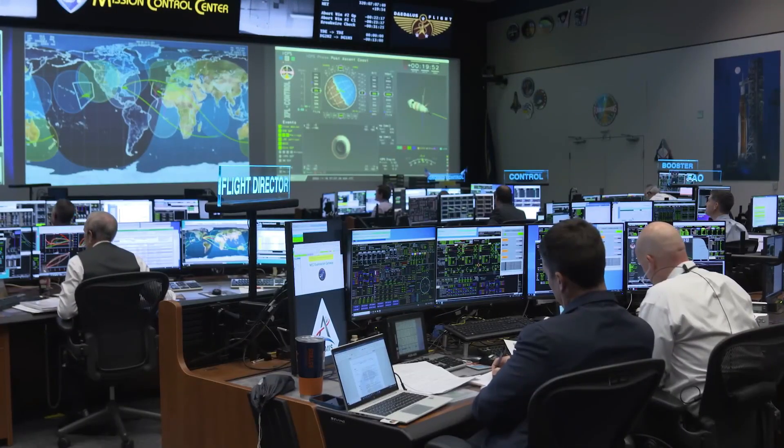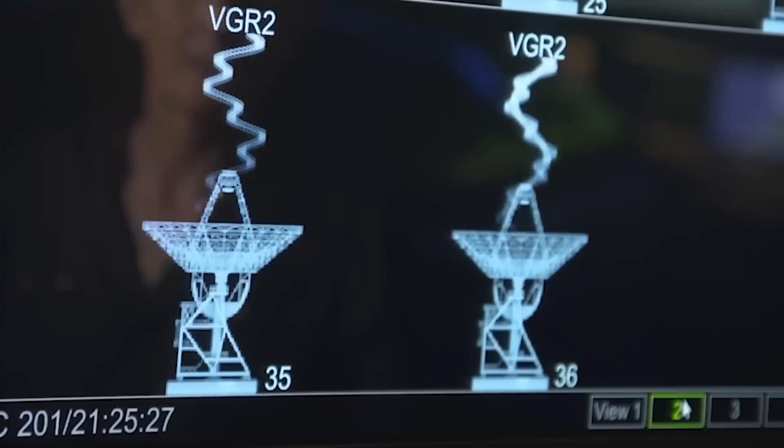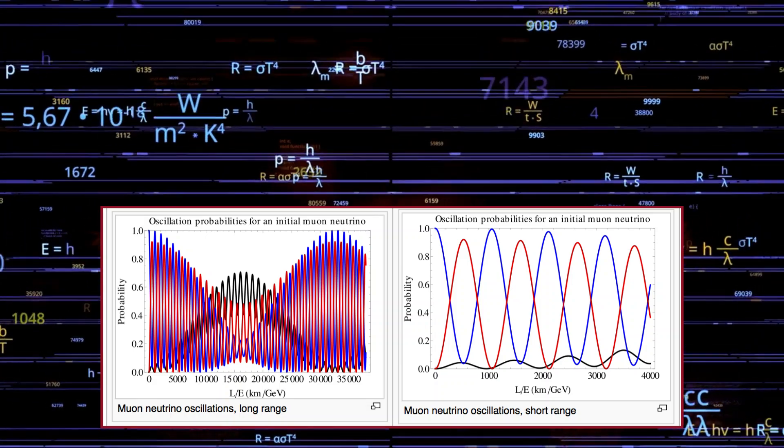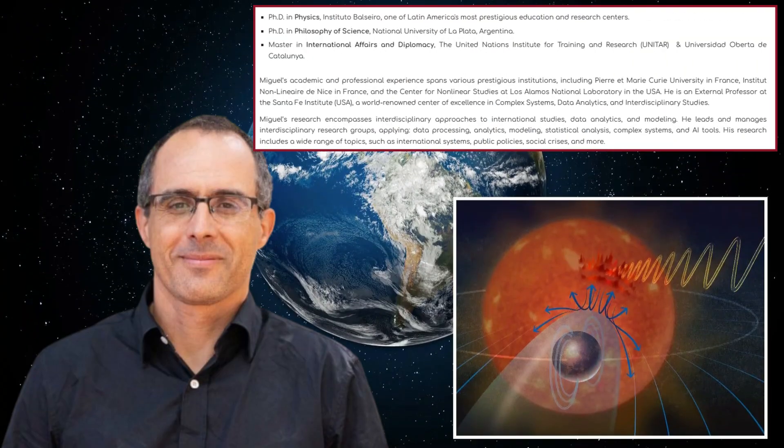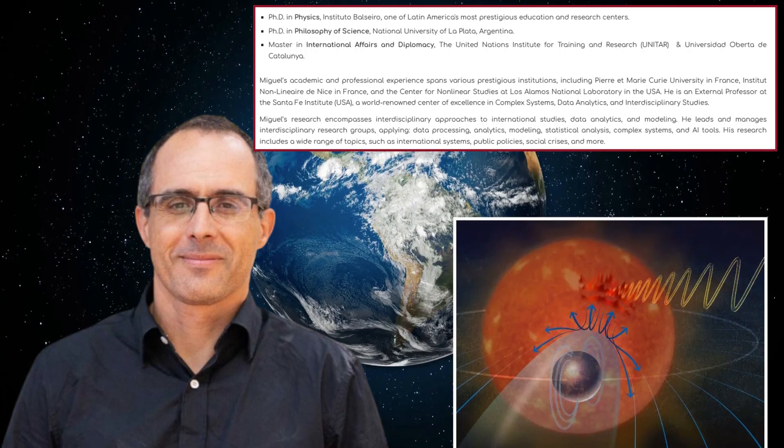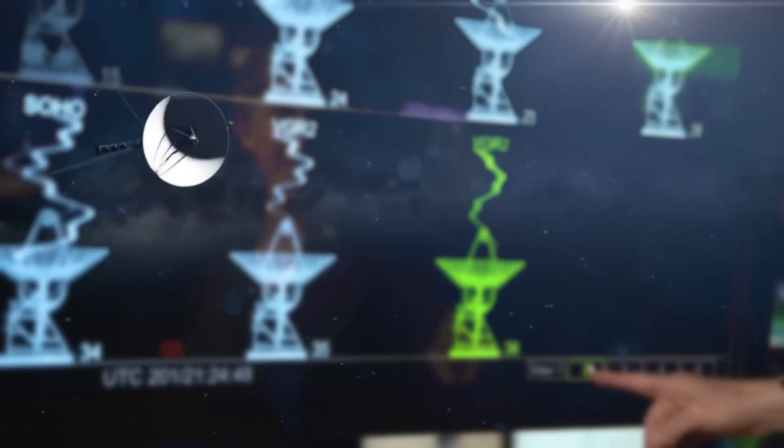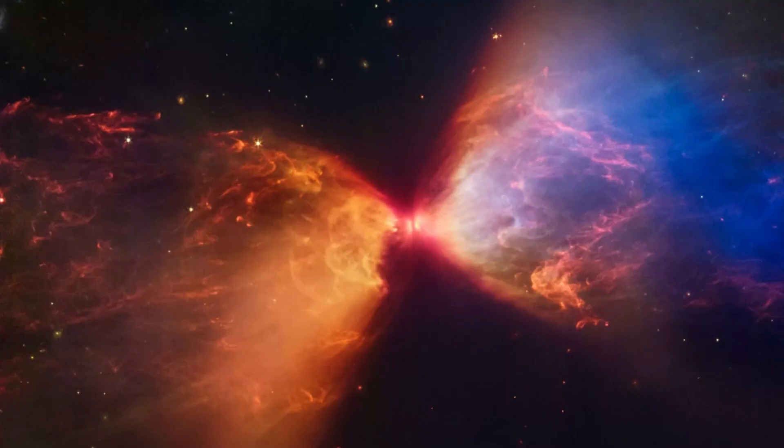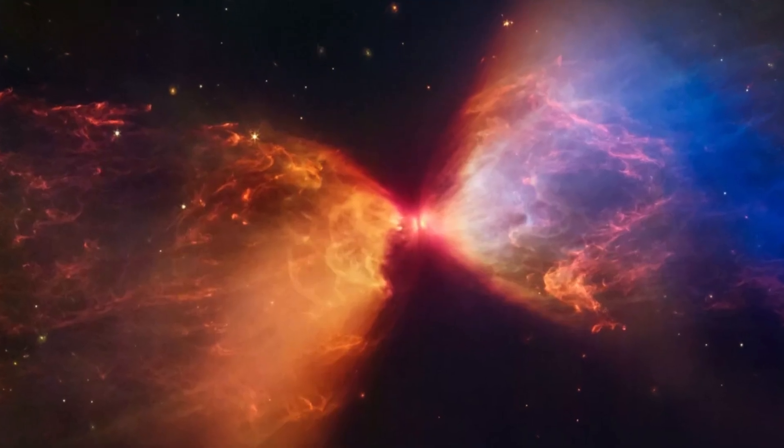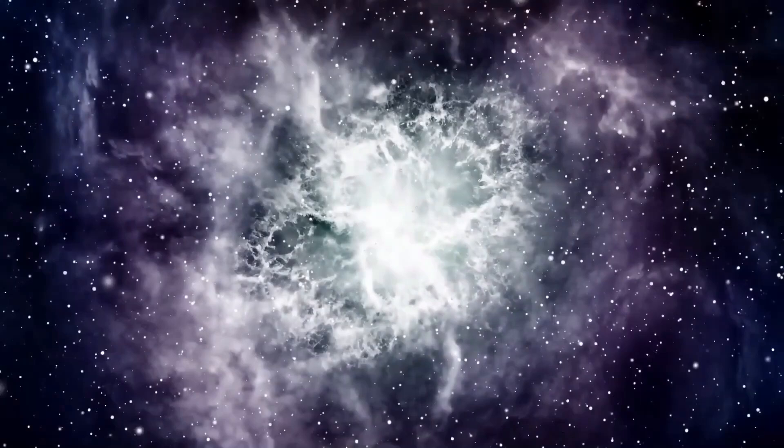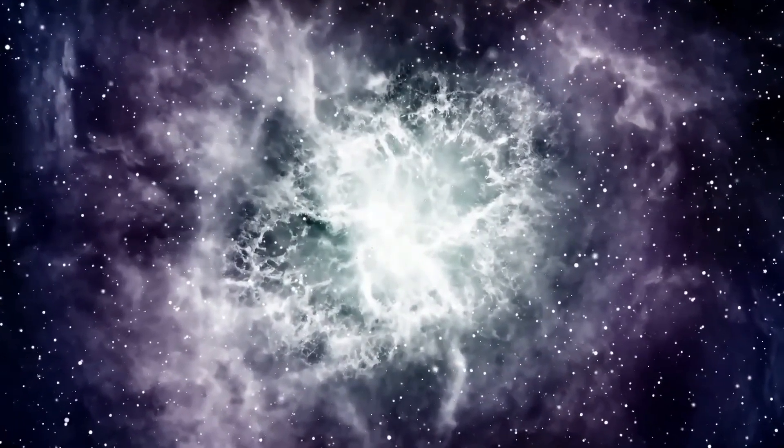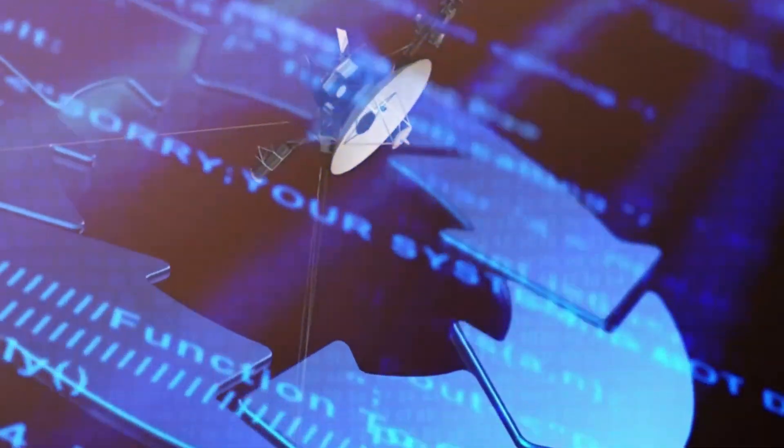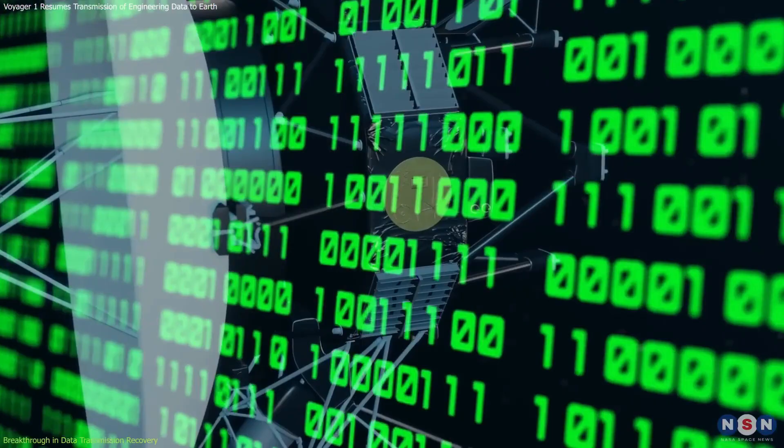Because Voyager 1 cannot detect neutrinos, scientists are turning to Earth's most powerful neutrino observatories to search for matching signals. Projects like IceCube Neutrino Observatory in Antarctica and Japan's Super-Kamiokande are now on alert, monitoring for any neutrino activity that aligns with Voyager's transmission. If similar oscillation patterns are detected from space, it could confirm that this isn't just an isolated spacecraft anomaly. It's something happening on a cosmic scale.